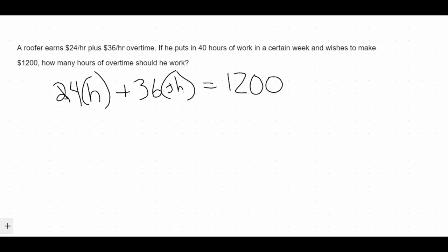Now we're solving for overtime hours, so we're solving for this piece right over here, which means we're going to have to try and plug something in for this H by that 24. So this is going to give us $24 times his regular hours that he makes in a week, plus $36 times his overtime hours.